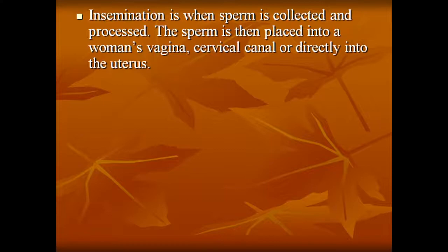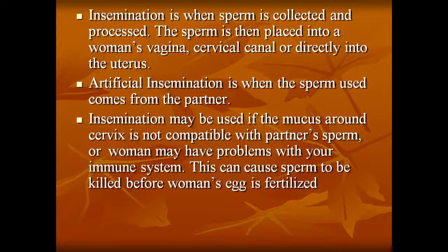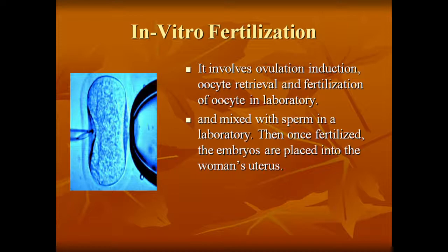Intrauterine insemination: sperm is collected, processed, then placed into the uterus. Insemination may be used if the cervical mucus is not compatible with the partner's sperm, or if the woman has problems with her own immune system causing the sperm to be killed before the egg is fertilized. In vitro fertilization involves ovulation induction, oocyte retrieval, and fertilization of the oocyte in the laboratory; the eggs are mixed with sperm in a laboratory, then once fertilized the embryos are placed into the woman's uterus.